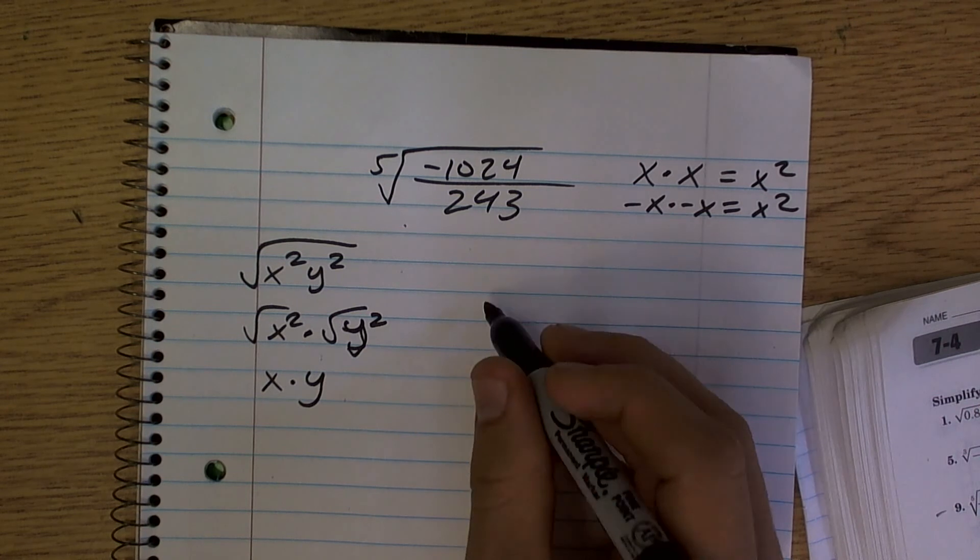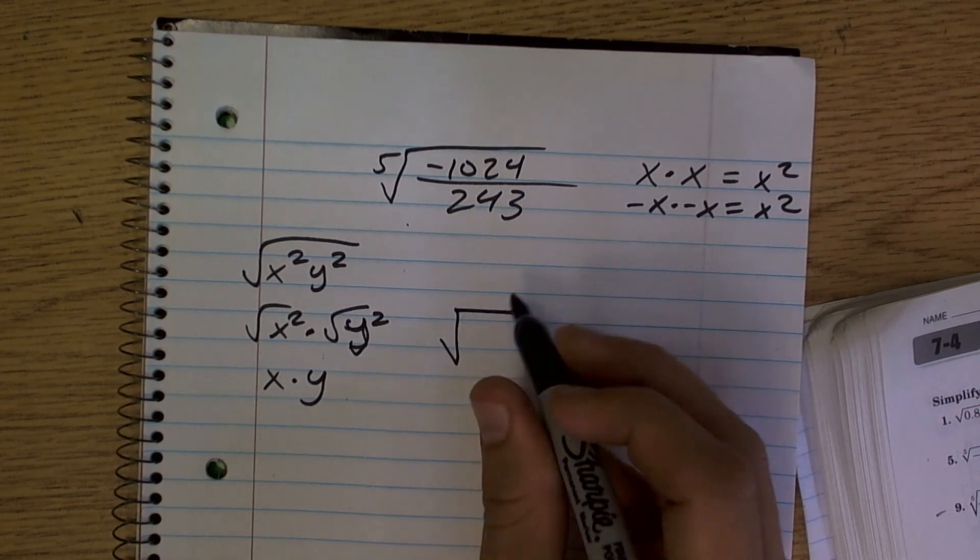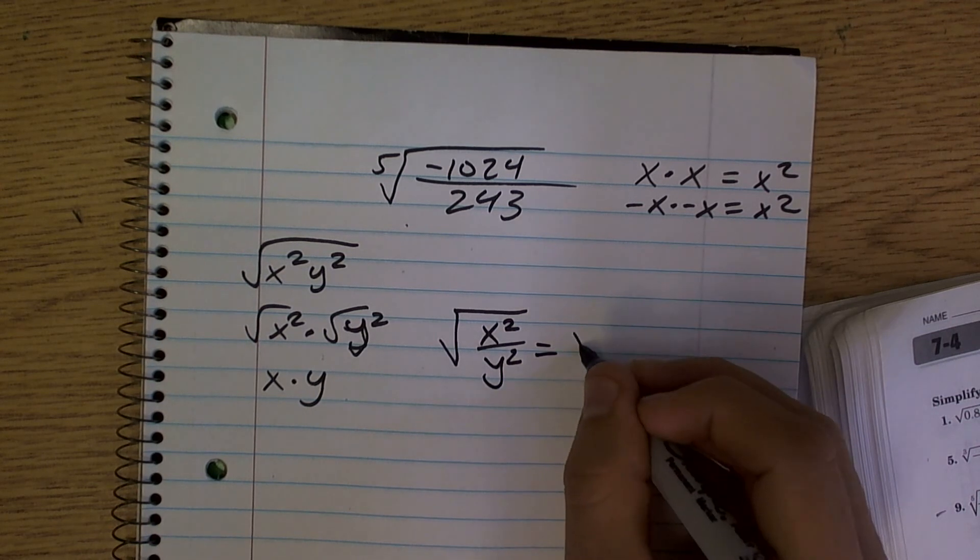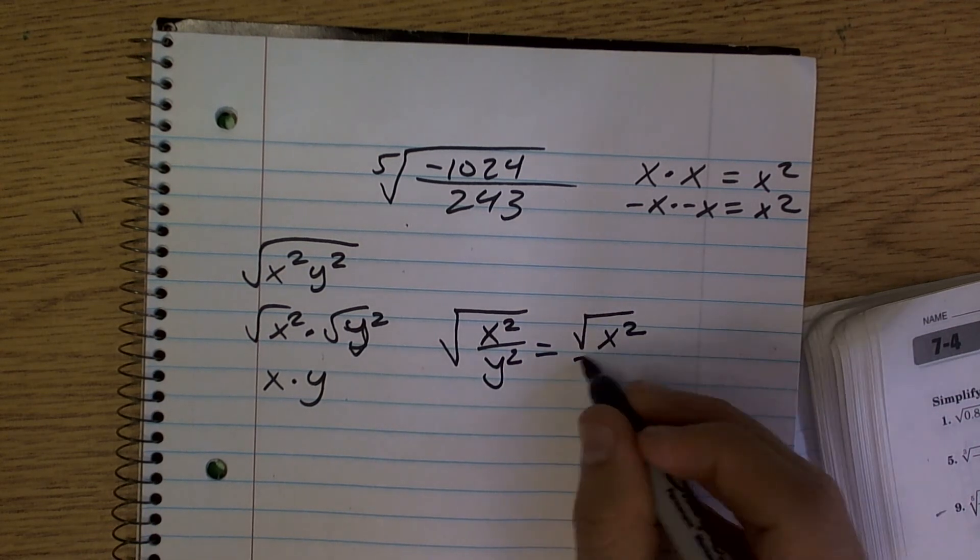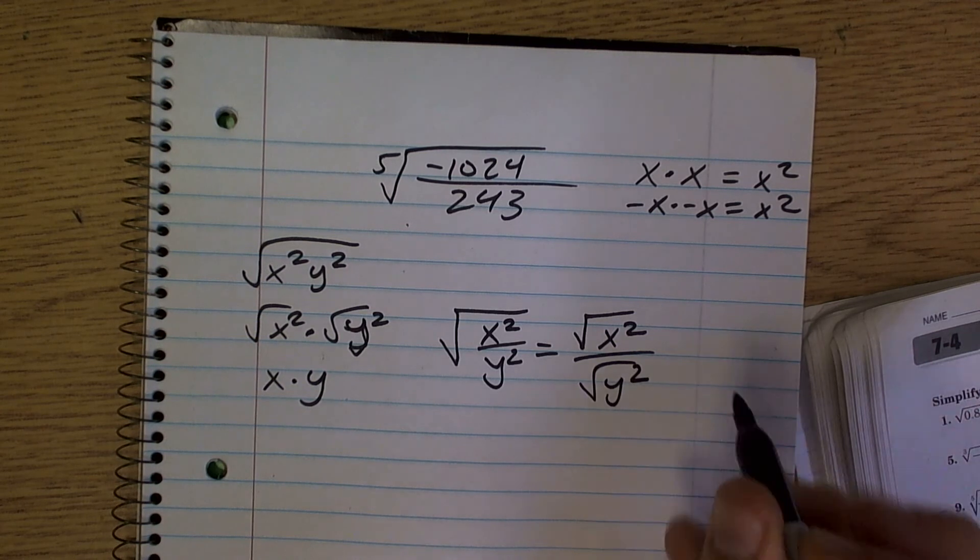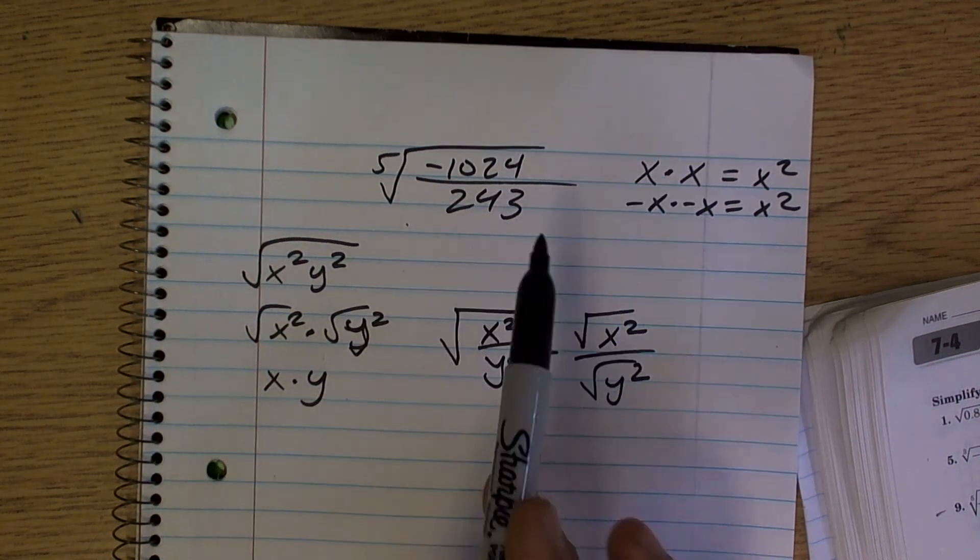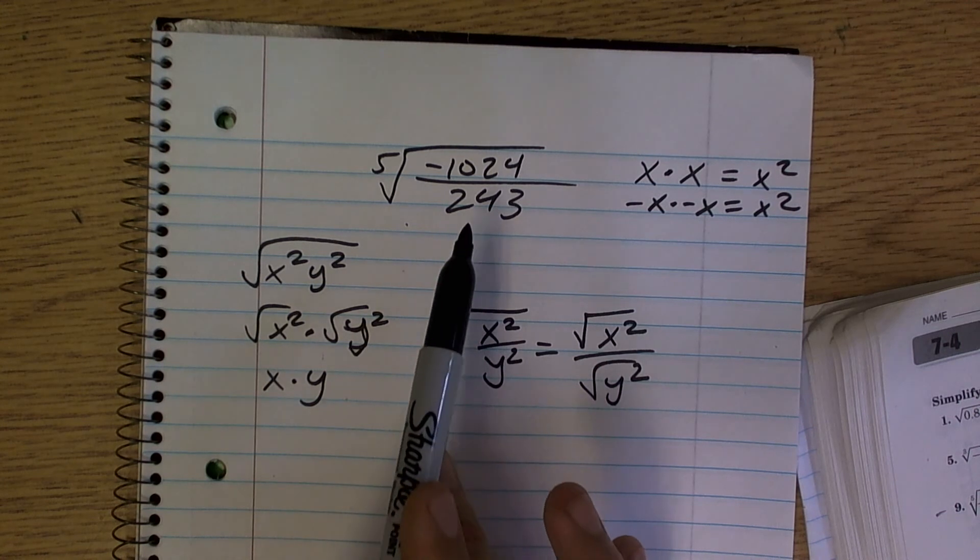The same thing works with division. If I have the square root of x squared divided by y squared, that is equivalent to the square root of x squared divided by the square root of y squared. So when you have a rational term like this, you can just do these separately.